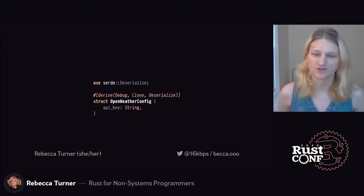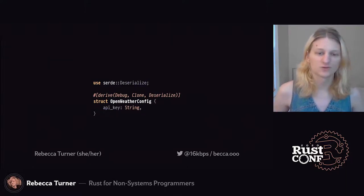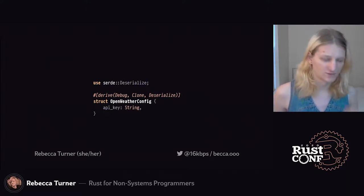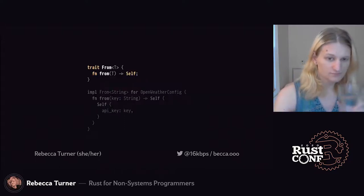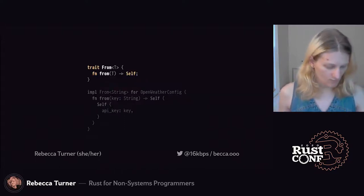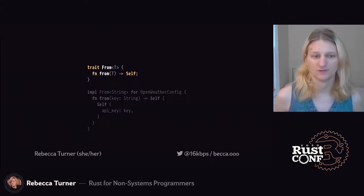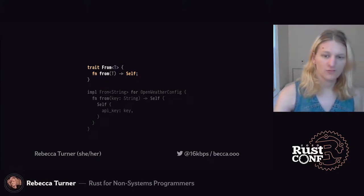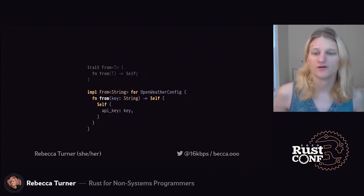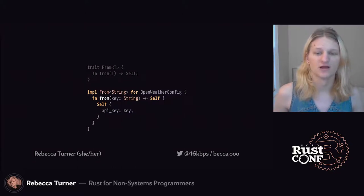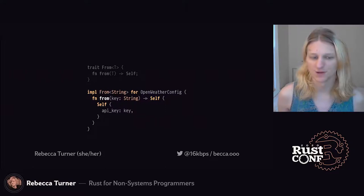Here we're declaring a struct, which is roughly a class in the sense of a blob of data with named fields and methods, and then we're deriving some traits for it. A trait is a set of method signatures that specify some interface. Here the `From` trait lets us convert from one type to another. We can implement a trait for a type with an `impl` block — note the `self` keyword there that indicates the impl block's type. That makes refactoring a lot easier.